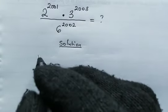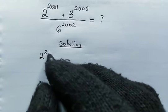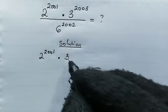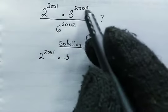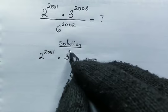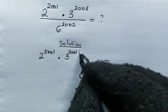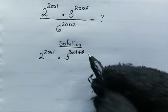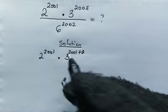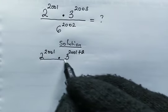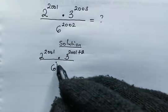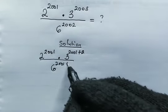From here, we have 2 to the power of 2001 multiplied by 3. Now we're going to write the power of 3 in terms of 2001. So here we're going to have 2001 plus 2, because 2001 plus 2 will give us 2003. Then we are dividing the whole of this by 6, and we're going to write the power as 2001 plus 1.